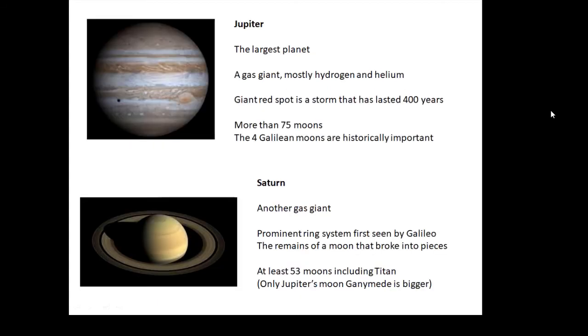Jupiter is the largest planet and it's the first of the gas giants—gas as in mostly hydrogen and helium and a few other bits and pieces as well. It has a giant red spot which is about the size of Earth.